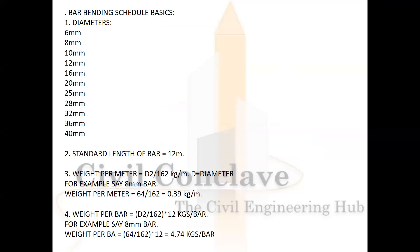The available sizes of bars in the market today are 6mm, 8mm, 10mm, 12mm, 16mm, 20mm, 25mm, 28mm, 32mm, 36mm, and 40mm. Generally the standard length of the bar is 12 meters. To calculate the weight per meter, the formula is d² divided by 162, which gives kg per running meter.